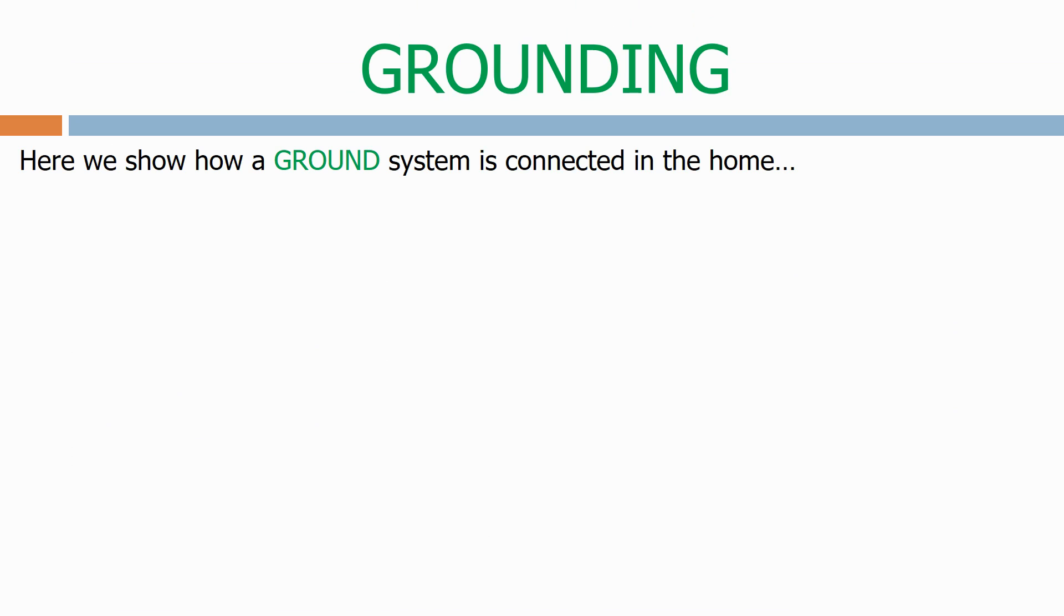Here we show how a ground system is connected in the home. Firstly we have an AC source with a live, neutral and ground connection.